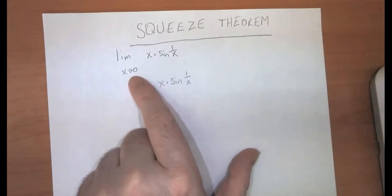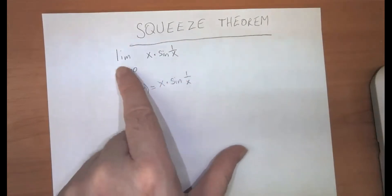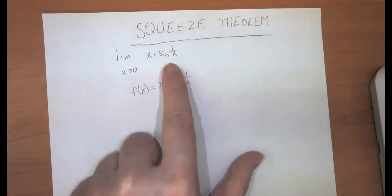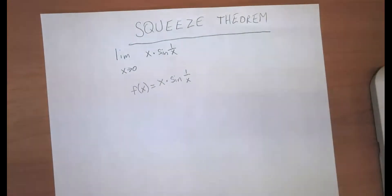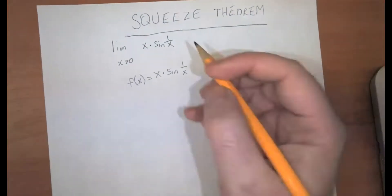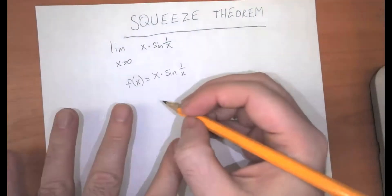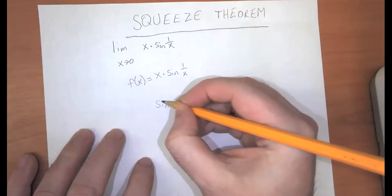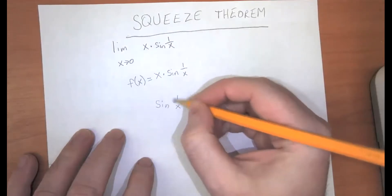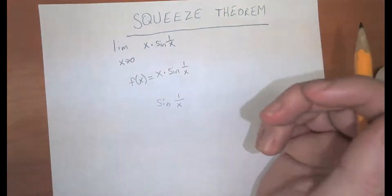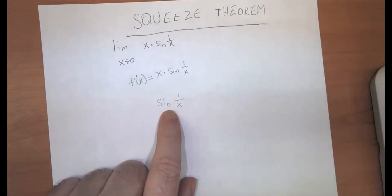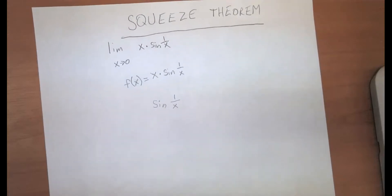Instead of taking the limit as x approaches 0 of sine of 1 over x, I'm going to take the limit as x approaches 0 of x times the sine of 1 over x. So that's f of x. Let's see what we can figure out about this function without making a graph, just by thinking about it. When x is not equal to 0, 1 over x is a real number. And what do we know about the sine of numbers? Well, they're bounded above and bounded below.